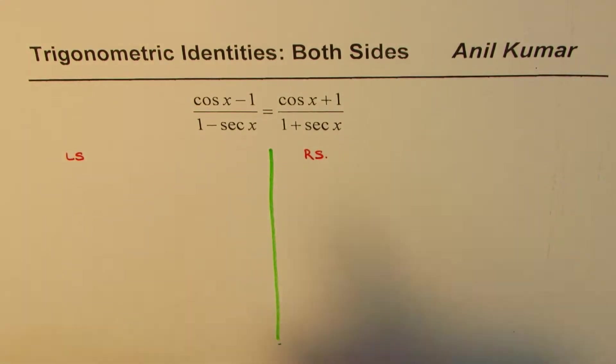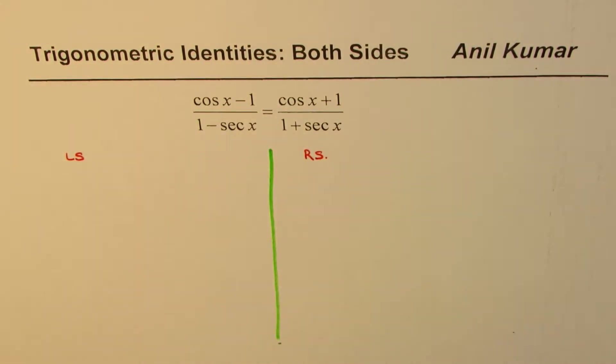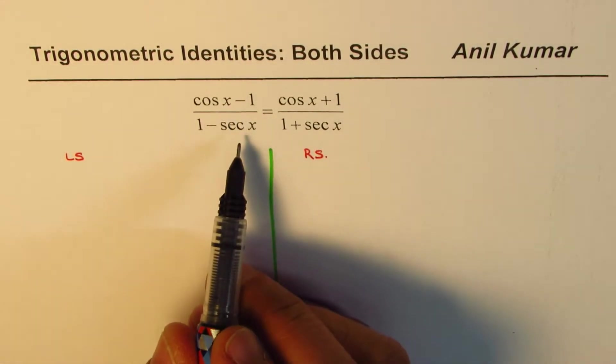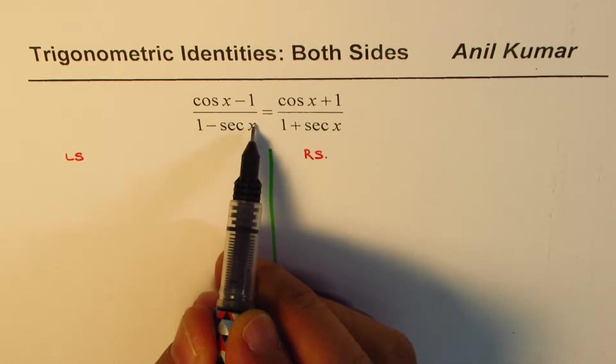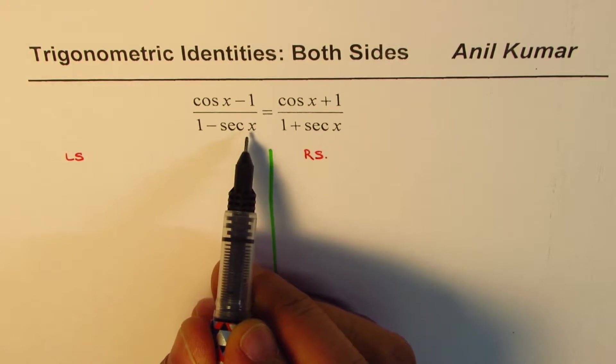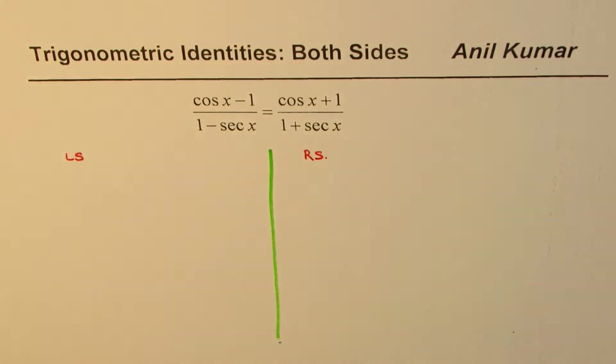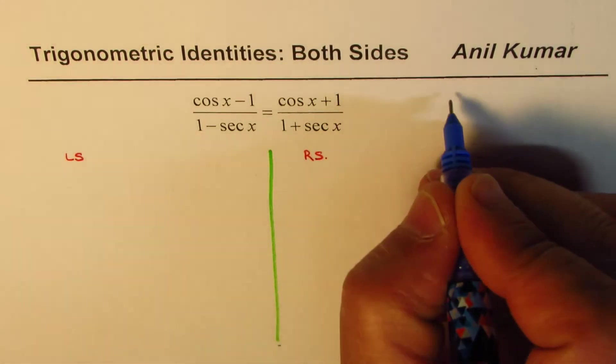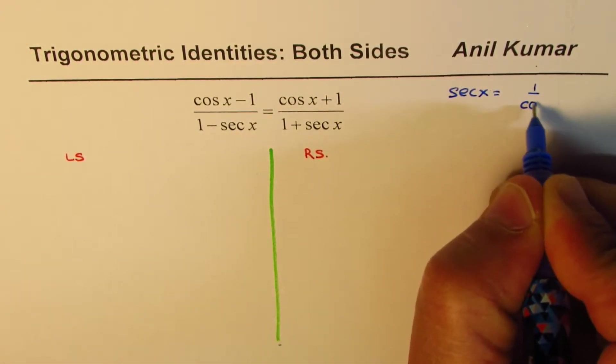We have (cos x - 1)/(1 - sec x). Whenever you have such expressions, it is better to write these reciprocal functions in terms of sine and cosine to move forward. So the strategy here is to replace sec x with 1/cos x and then simplify.